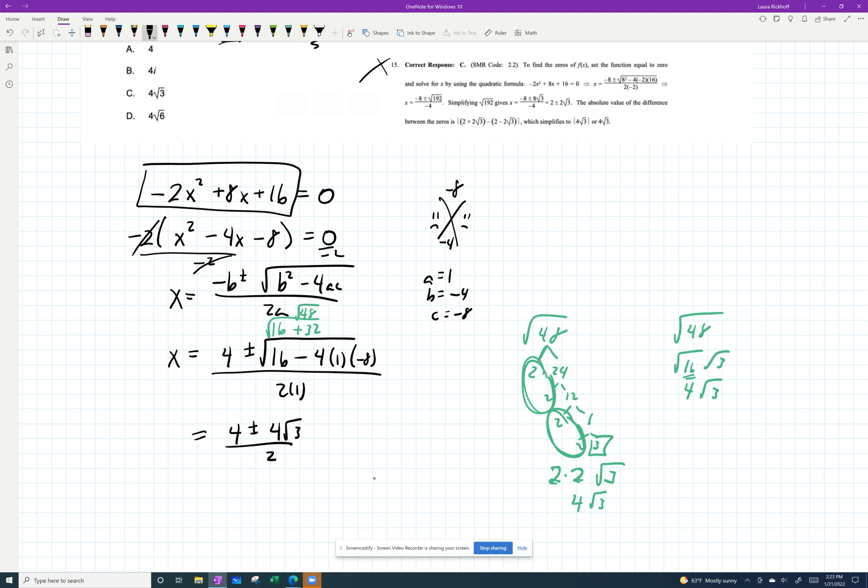And then you can simplify magic triangle style, my teacher said. Like, so if you can divide all three of those by the same thing, go ahead and do it. So that's 2 plus or minus 2 root 3 all over 1. Those are your zeros.